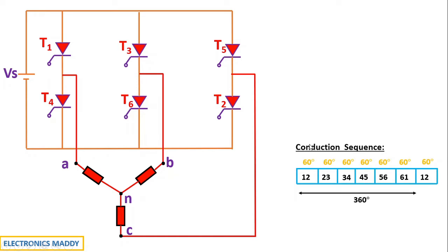The triggering sequence goes: 1-2, then 2-3, 3-4, 4-5, 5-6, 6-1, with the pattern changing every 60 degrees. From 1-2 to 2-3, thyristor 1 is turned off and 3 is turned on. From 2-3 to 3-4, thyristor 2 is turned off and 4 is turned on. That is, one thyristor is outgoing, one is incoming, and one previously conducting thyristor remains in conduction. That is the pattern in which it is triggered.